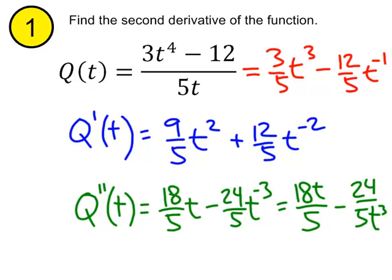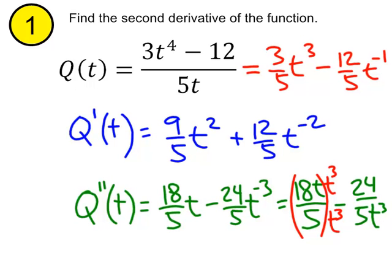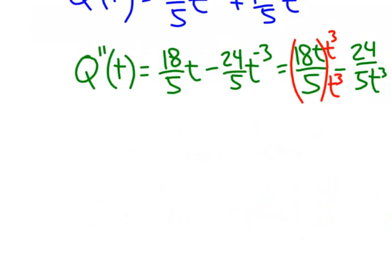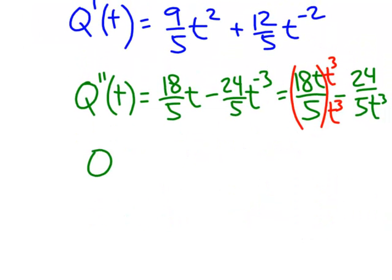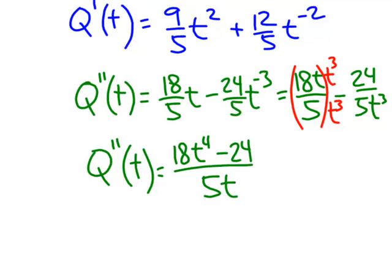If I want to go ahead and combine those into a single term, and again, there are reasons why we eventually will want to do that in certain scenarios. If I want to combine those into a single term, I'll multiply top and bottom by t cubed, and that will give me my common denominator. So that would give me a final second derivative of q double prime of t equals 18t to the fourth minus 24 all over 5t cubed.